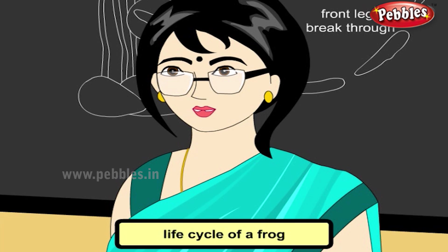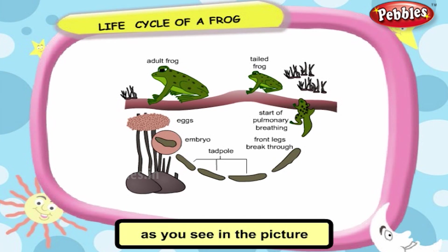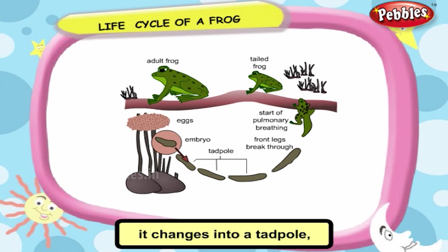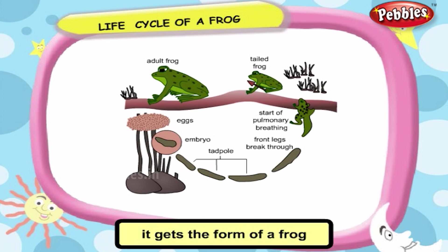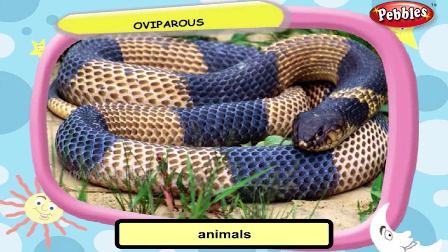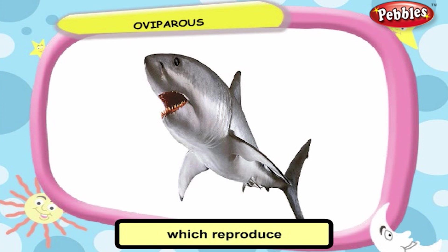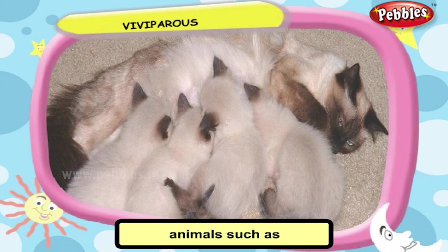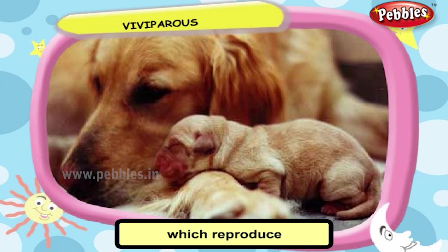Let us see the life cycle of a frog. As you see in the picture, a frog lays eggs. The next stage of the egg is called the embryo. Then it changes into a tadpole, where it crosses three stages, and in the final stage it gets the form of a frog. Animals such as snakes and fish which reproduce by laying eggs are called oviparous. Animals such as cat and dog which reproduce by giving birth to young ones are called viviparous.